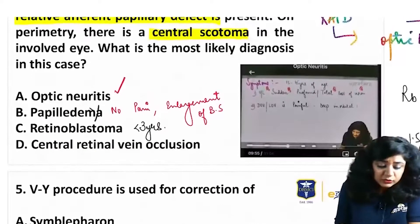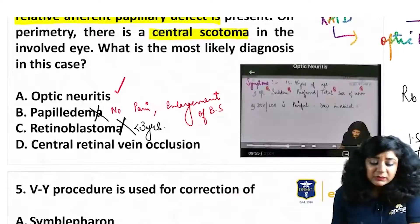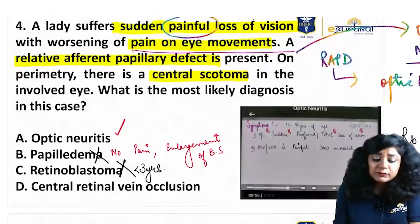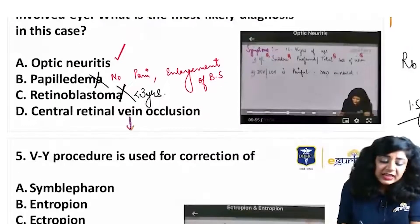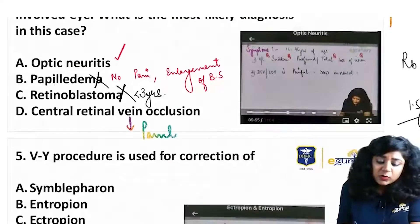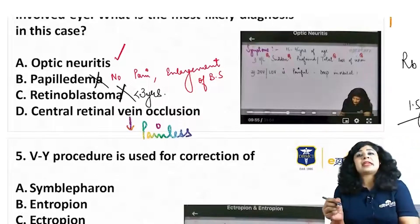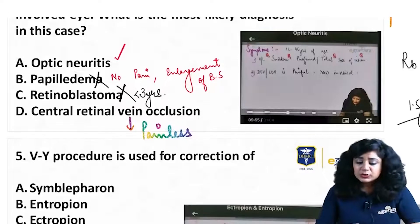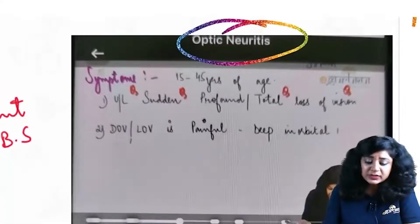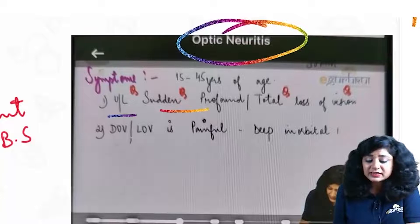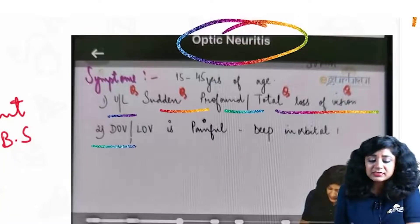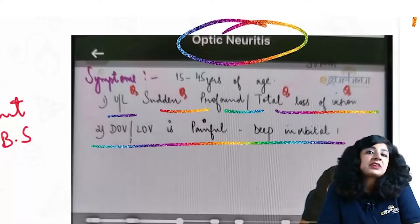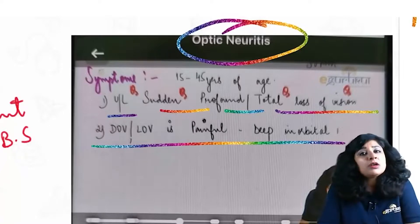It's not papilledema either. Coming to CRVO, this is clearly a painful diminution of vision, while CRVO will be painless — all vascular occlusions, whether CRAO or CRVO, are painless. So again, the answer is optic neuritis: unilateral, sudden, profound loss of vision with painful deep orbital pain aggravated by ocular movements.